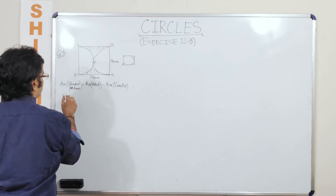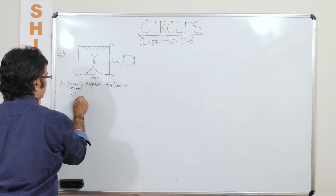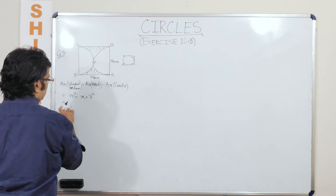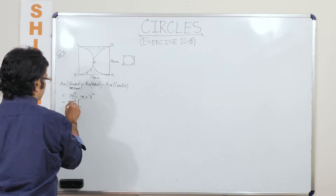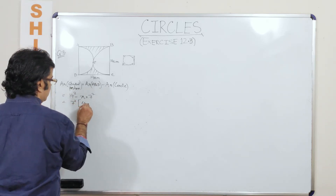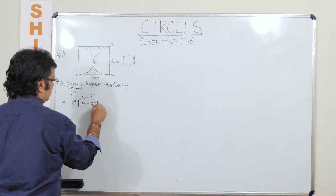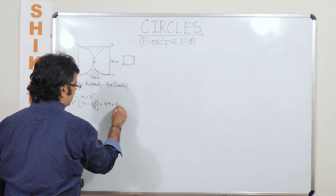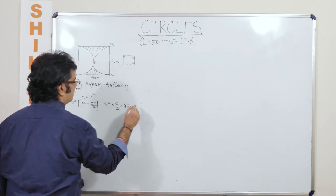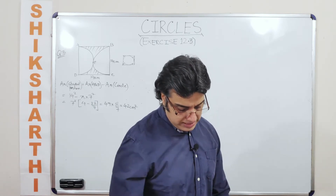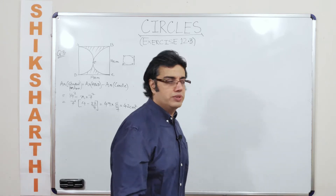The area of the square is 14 squared, minus the area of the circle which is π times 7 squared. Taking 7 squared as common, this is 7 squared into 4 minus 22 by 7, which becomes 49 into 6 by 7, which gives 42 centimetre square. They have given the unit as centimetre only.